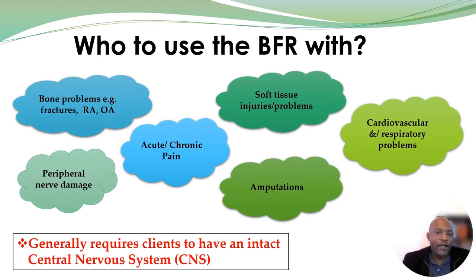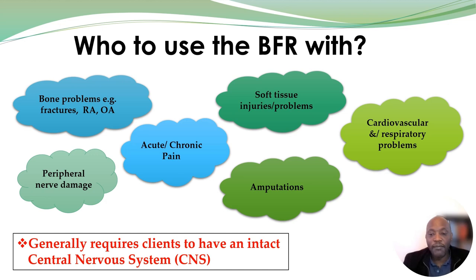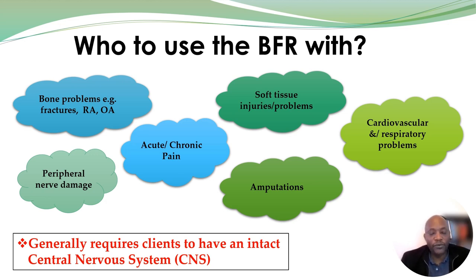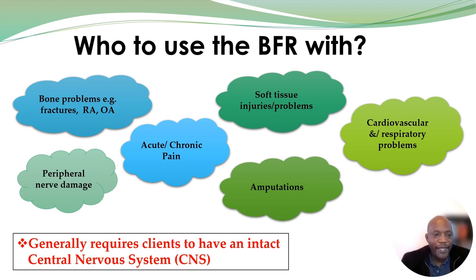We generally use this frame of reference whenever our service user or client is having problems affecting their joint range of motion, muscle strength, or endurance. This could include people with fractures, arthritic conditions like rheumatoid arthritis or osteoarthritis, soft tissue injuries such as muscle injuries or injuries to ligaments or tendons, people with amputations, pain, peripheral nerve damage, or people with cardiorespiratory problems that affect their endurance.